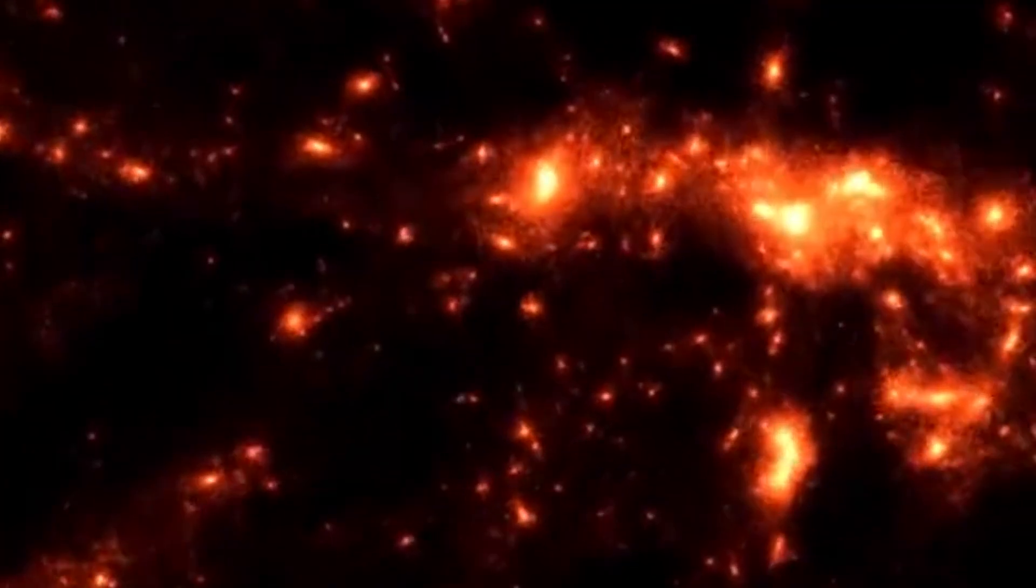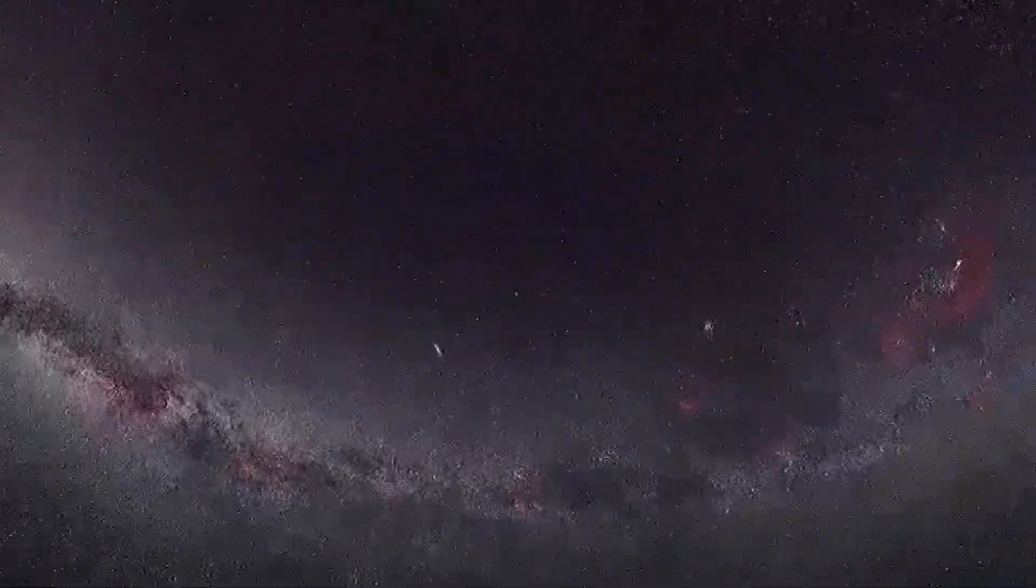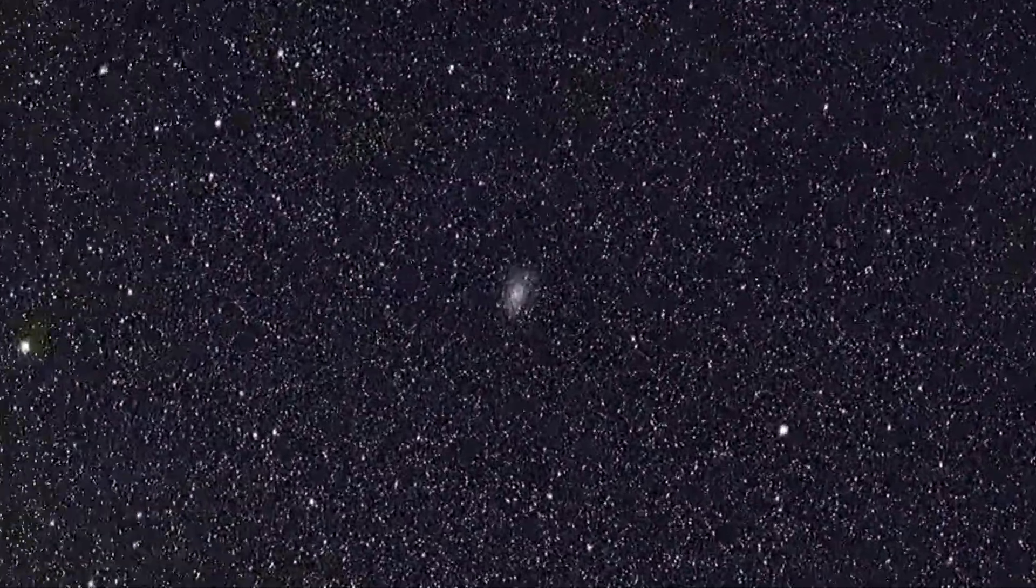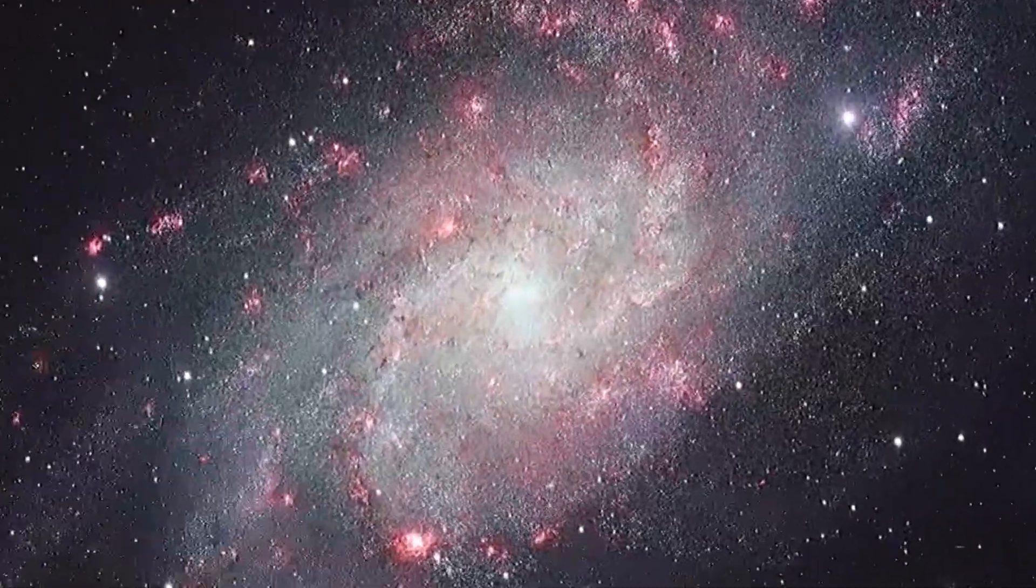If you could see Andromeda in full, it would appear six times wider than the Moon in the night sky. It's the largest galaxy in our local group, dominating smaller members like the Triangulum Galaxy, M33, and dozens of dwarf galaxies.